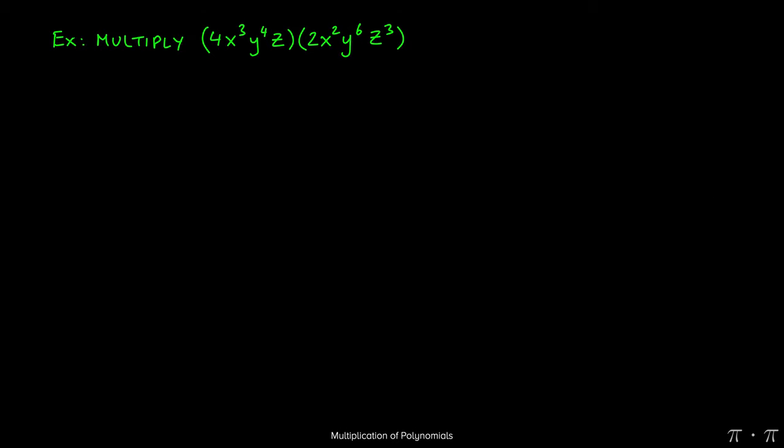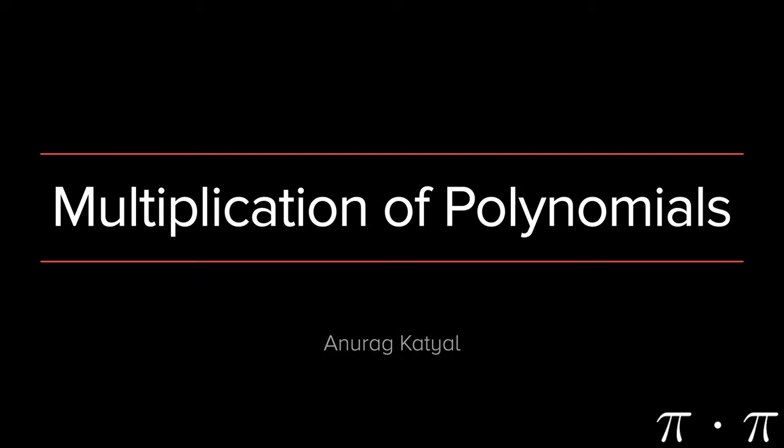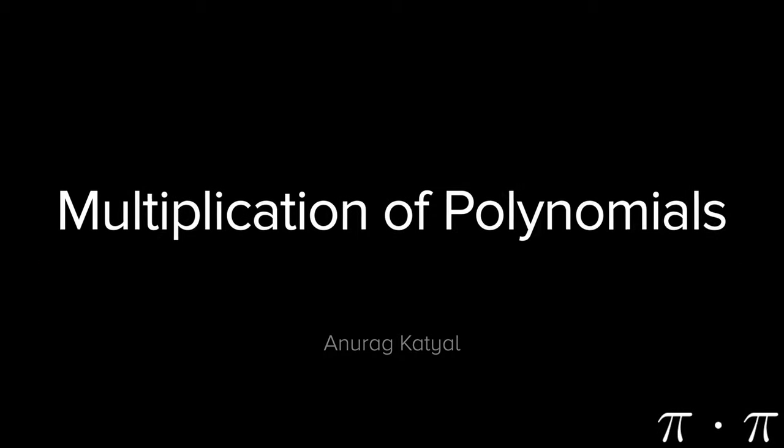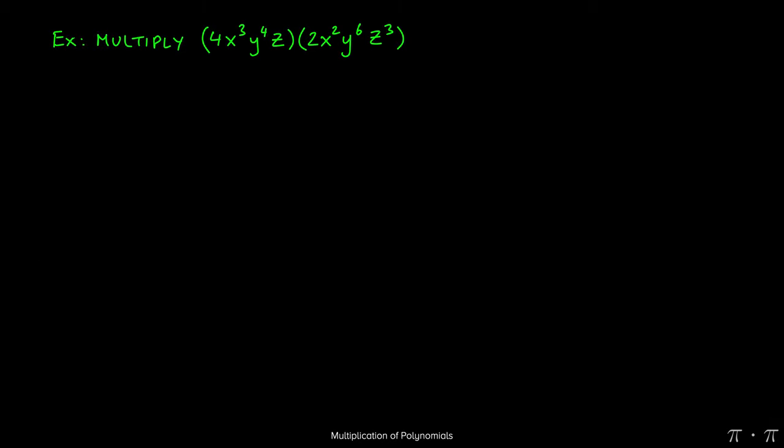We're asked to multiply these two monomials: 4x³y⁴z and 2x²y⁶z³.